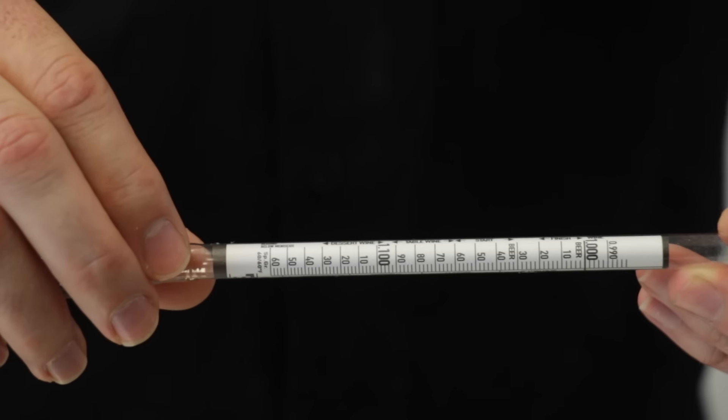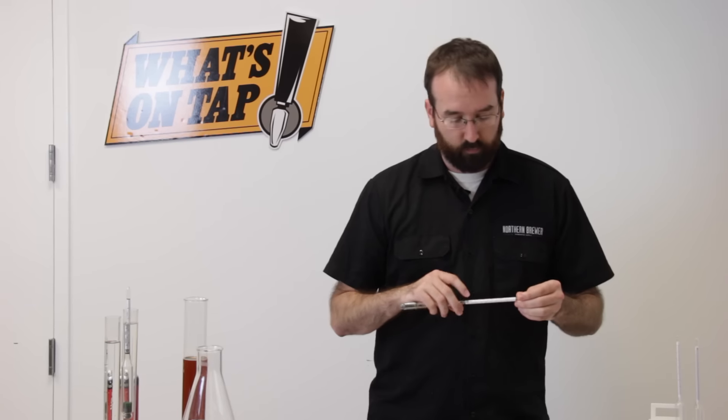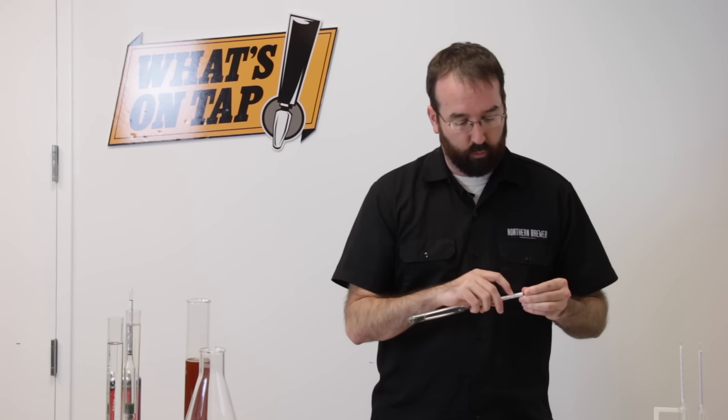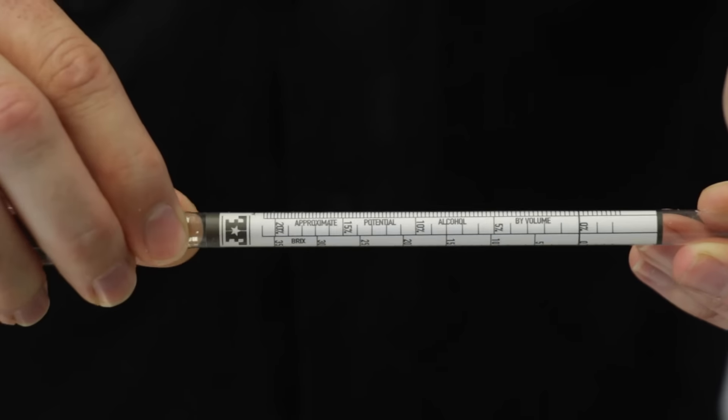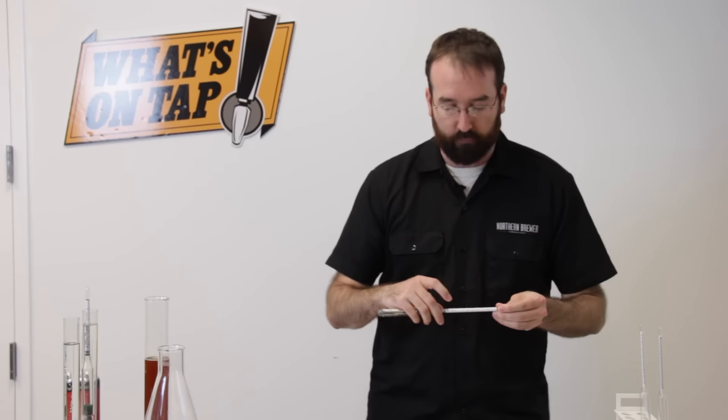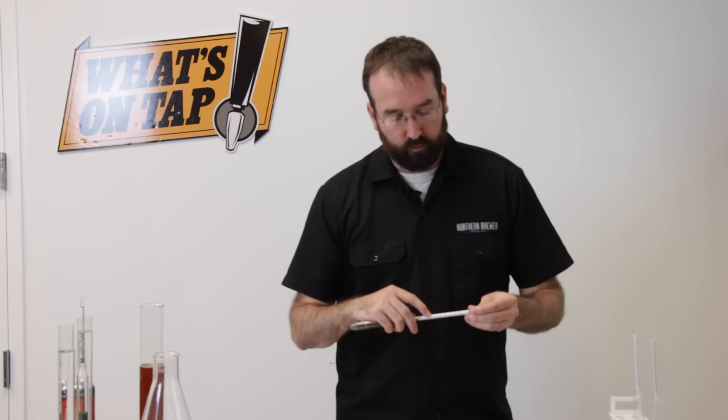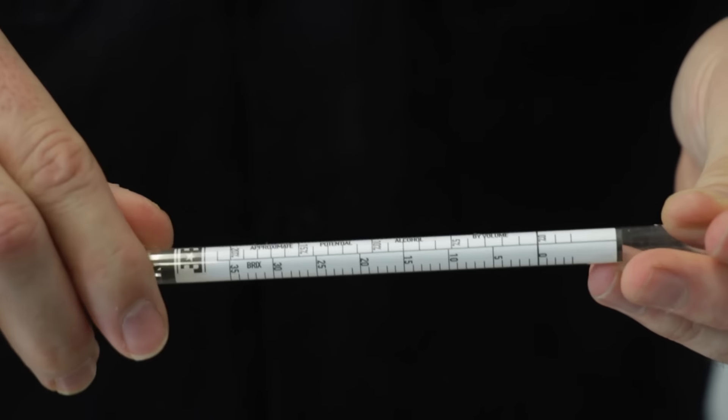On a standard hydrometer, there are three scales. You're looking at here the specific gravity scale. Specific gravity runs from 1.00 all the way to somewhere around 1.16. On this side, we've got our potential alcohol. Now, if your beer started at 15 and fermented all the way back to zero, you would have a 15% beer.